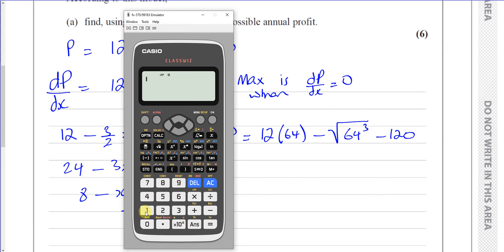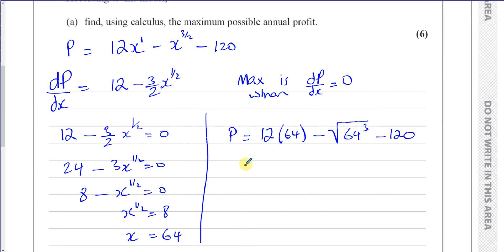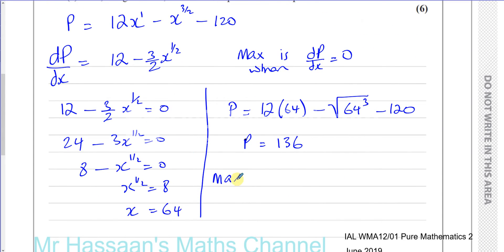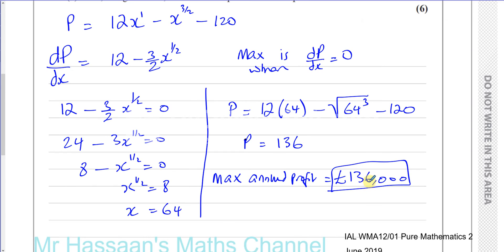So we have 12 times 64 minus the square root of 64 cubed minus 120. Be very careful on your calculator at this stage — make a space before the minus sign, otherwise it will be included under the square root sign. That gives P equals 136. But remember P is measured in thousands of pounds, so if you write 136 you'll lose a mark. The maximum annual profit is therefore 136,000 pounds.